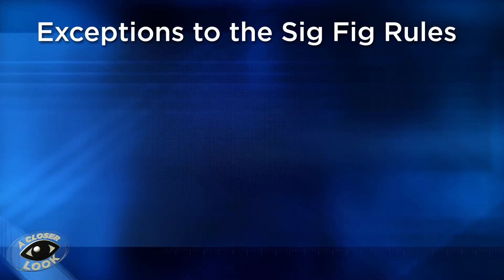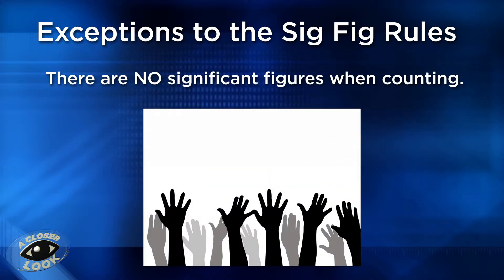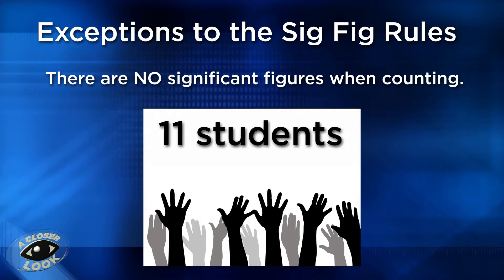There are some exceptions to the rules, as follows. When counting, there are no significant figures. For example, if you count students in a classroom, no significant figure rules would apply, because that would be considered an exact quantity, and not something that would require a measurement by an instrument.